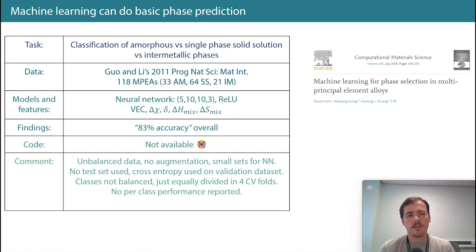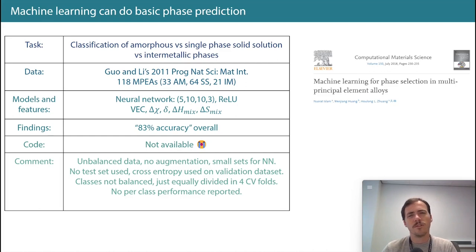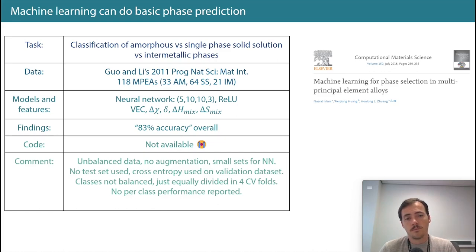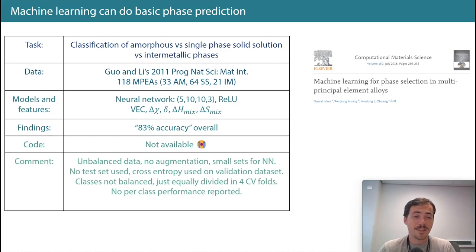They also used the difference in atomic size and the entropy of mixing (ΔS_mix). Their findings: the model was quoted as 83% accuracy overall. Code and data were not provided — total bummer.